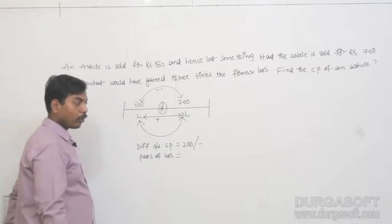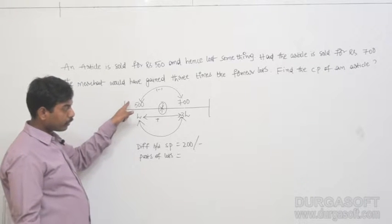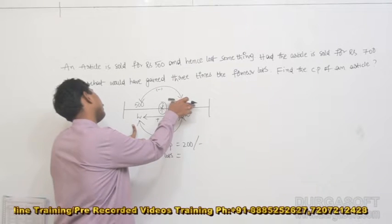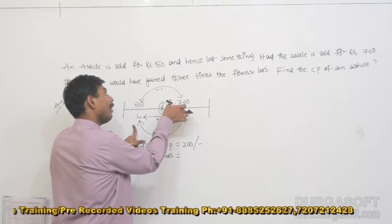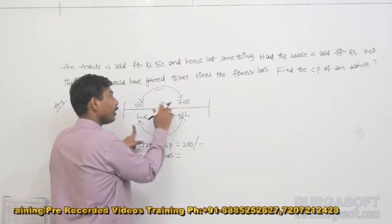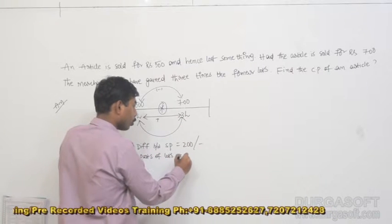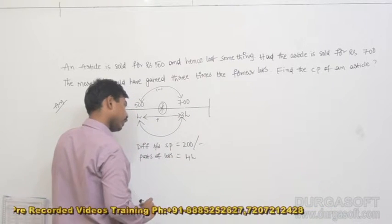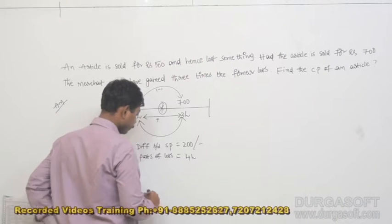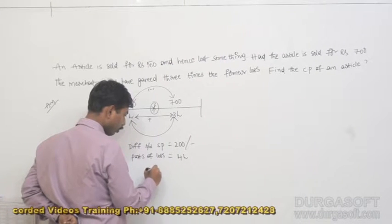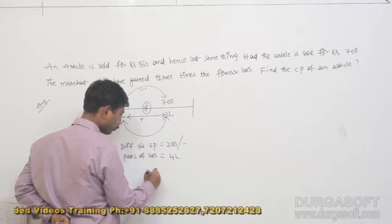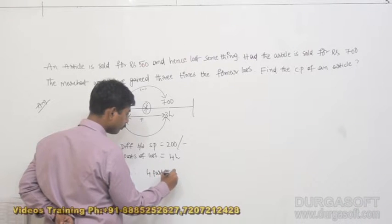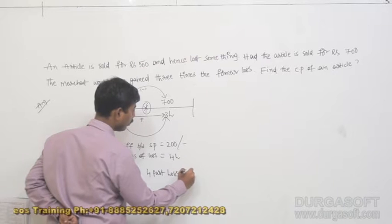When we sold an article for Rs.500, that is one part of a loss. When we sold an article for Rs.700, that is three parts of a loss as profit. Loss plus three parts of a loss — total four parts of a loss only we got here, indirectly. Therefore, four parts of a loss is equal to 200.